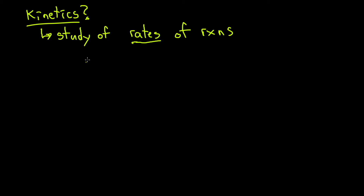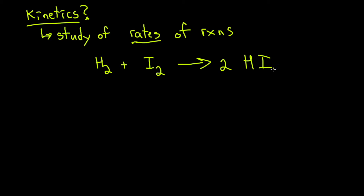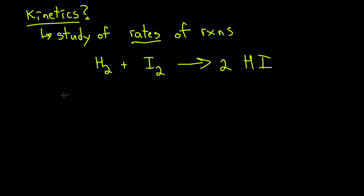For example, if we have an equation of H₂ plus I₂ that makes 2HI, we can measure the rate in terms of a reactant, or we can measure the rate of the reaction in terms of the product.